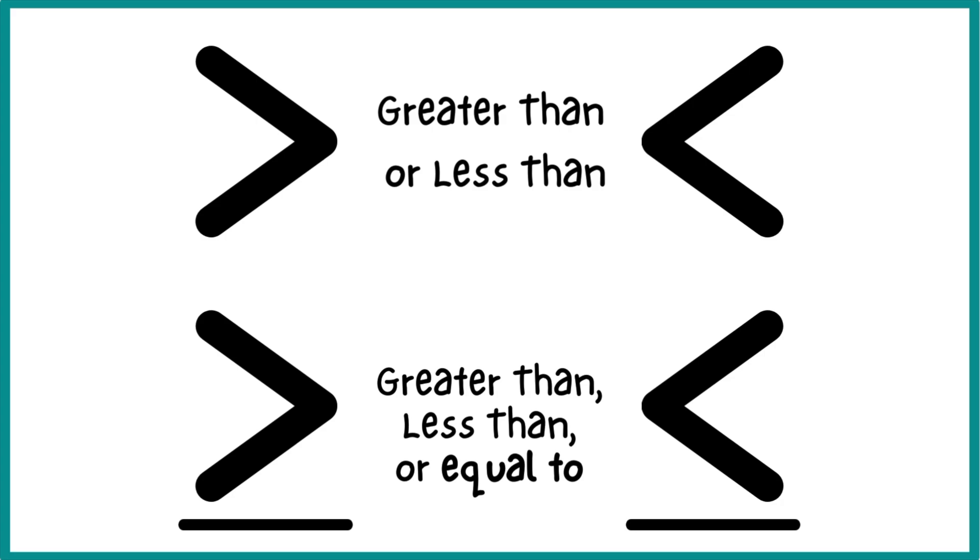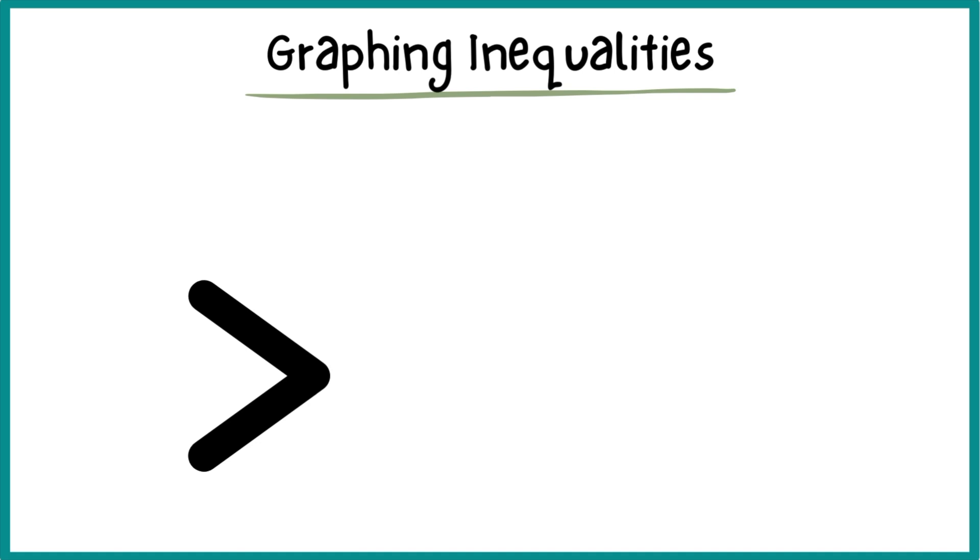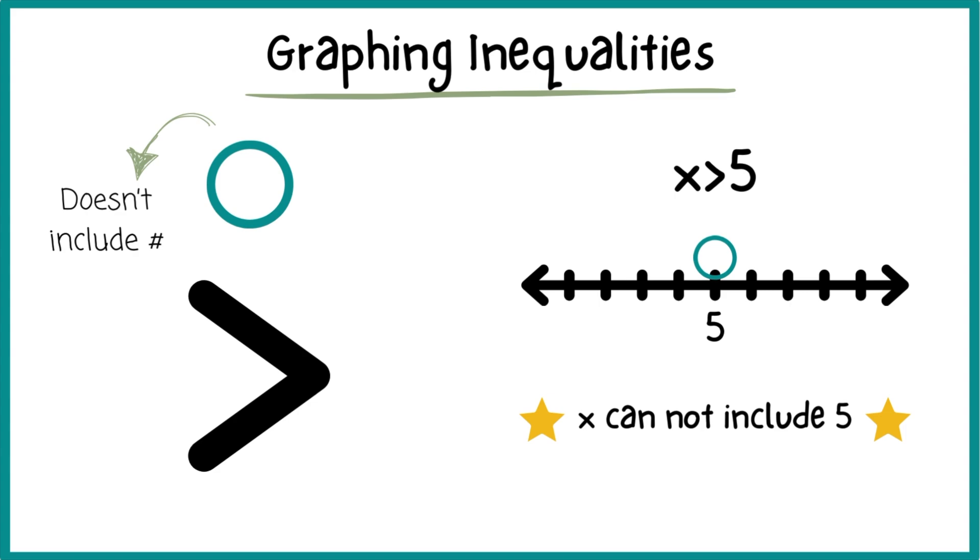When we are graphing, this is going to be very important. When we are graphing inequalities, you might see just the typical greater than, less than symbol. If it is this, our graphing dot will be open. That means it does not include the number we are talking about. For example, if I say I'm looking for a number that is greater than 5, that dot is going to be open on top of the 5 because it does not include the 5.